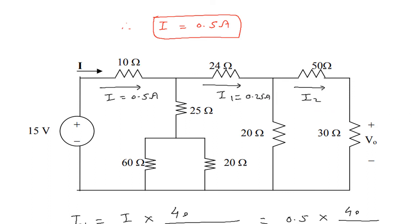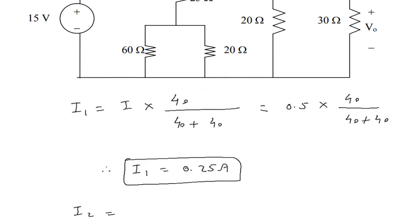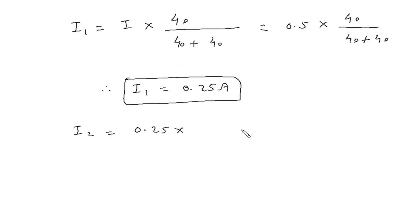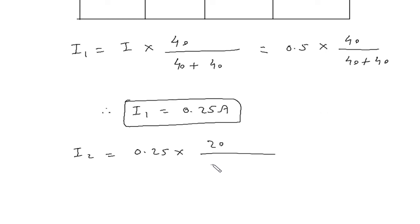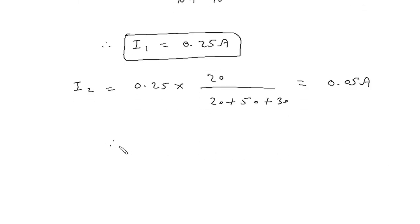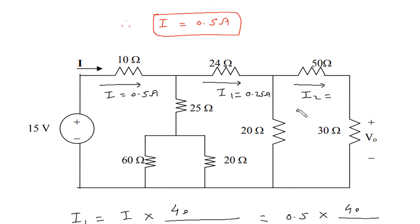Then we will find I2 using the current division rule. I2 is equal to 0.25 into 20 Ohm by total, which is 20 plus 50 plus 30. So I2 is equal to 0.05 Ampere.